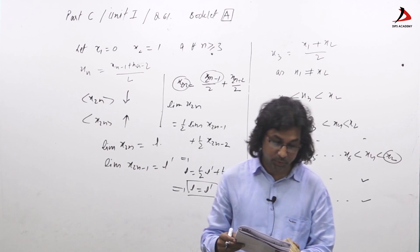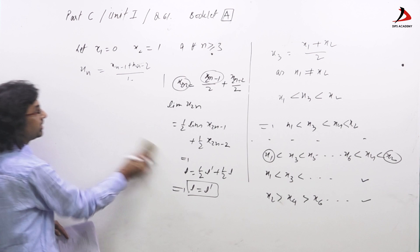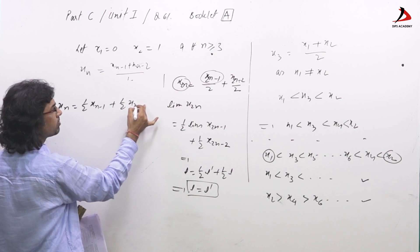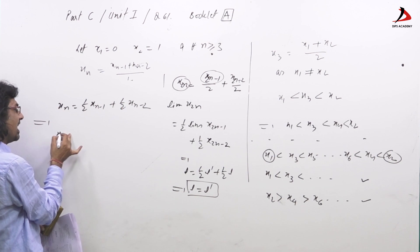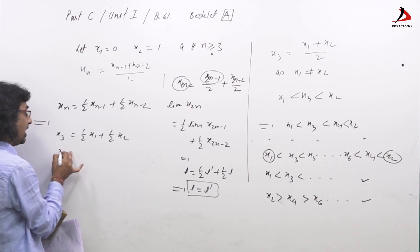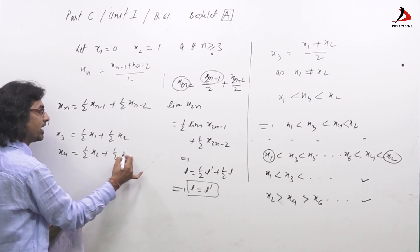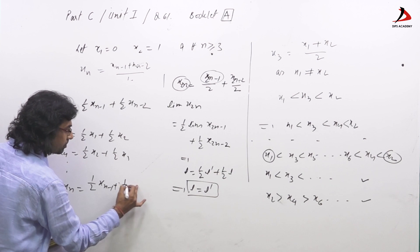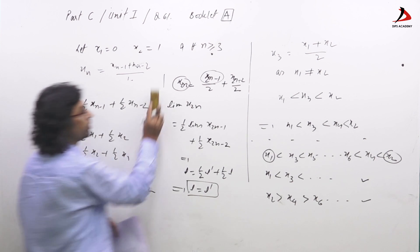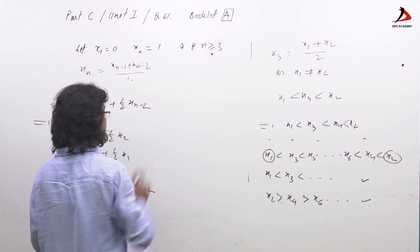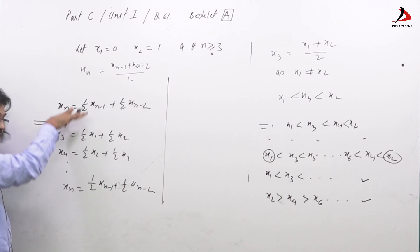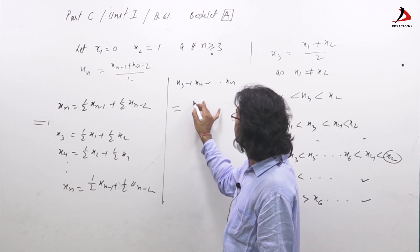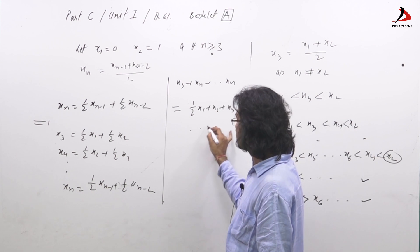Now let us find the actual limit. Writing the recurrence: x₃ = (1/2)x₁ + (1/2)x₂, x₄ = (1/2)x₂ + (1/2)x₃, and so on up to xₙ = (1/2)xₙ₋₁ + (1/2)xₙ₋₂. Adding all these equations vertically, the left side gives x₃ + x₄ + … + xₙ and the right side accumulates as (1/2)x₁ + (1/2)(x₂ + x₃ + … ).